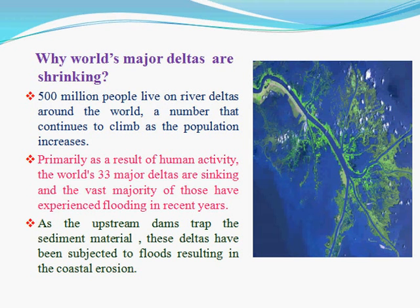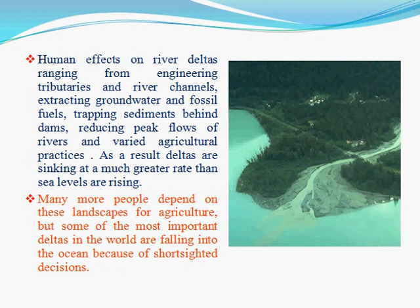As upstream dams trap sediment material, these deltas have been subjected to floods resulting in coastal erosion. Human effects on river deltas range from engineering tributaries and river channels, extracting groundwater and fossil fuels, trapping sediments behind dams, reducing peak flows of rivers, and varied agricultural practices.